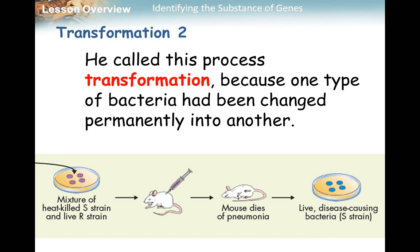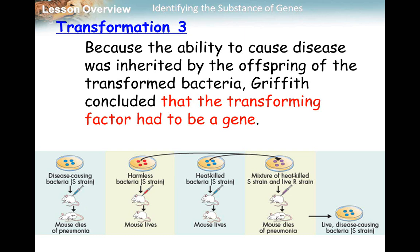One type of bacteria had been changed permanently into another. He killed the bad bacteria, mixed it with good bacteria that wasn't causing pneumonia, and it ended up turning into the bad bacteria, permanently transforming it into a new type of bacteria. Because the ability to cause disease was inherited by the offspring of the transformed bacteria, he concluded that the transforming factor had to be a gene.